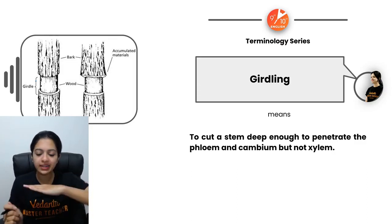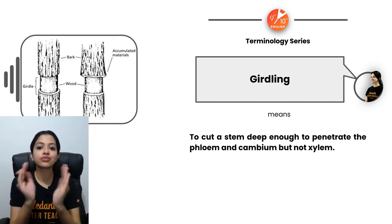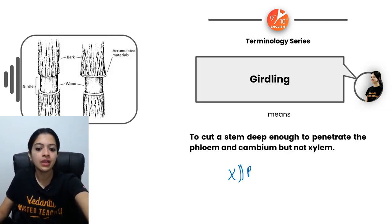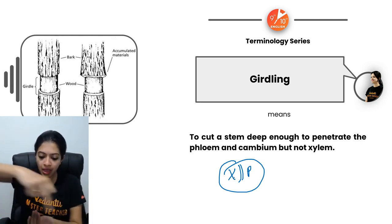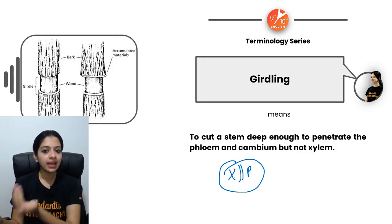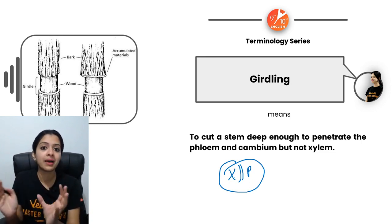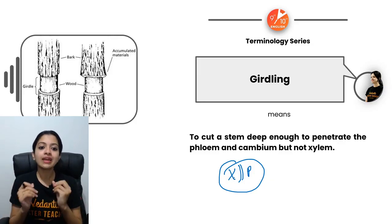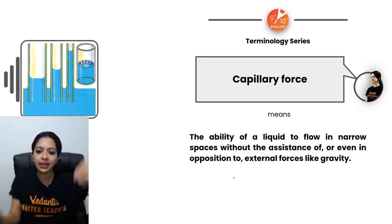Girdling is the process used in the girdling experiment where you cut a stem not completely but penetrate just deep enough to cut through the outer phloem and cambium but not the xylem. In a rounded stem, xylem forms an inner ring, with cambium and phloem surrounding it. So you penetrate the blade just deep enough to cut the phloem and cambium without reaching the xylem — this is the process of girdling.